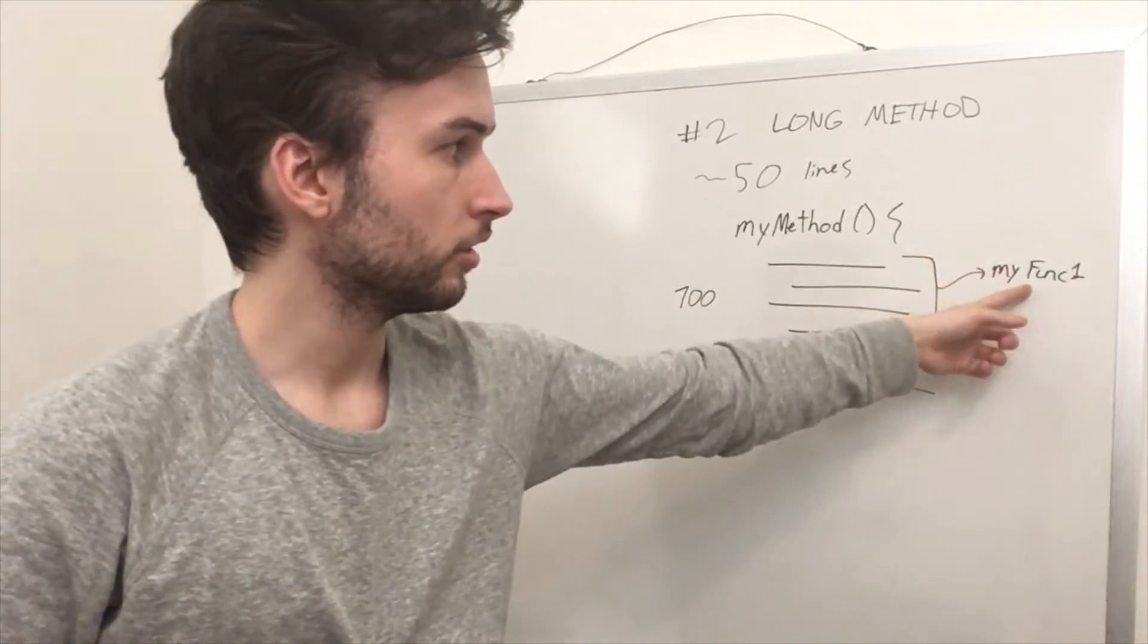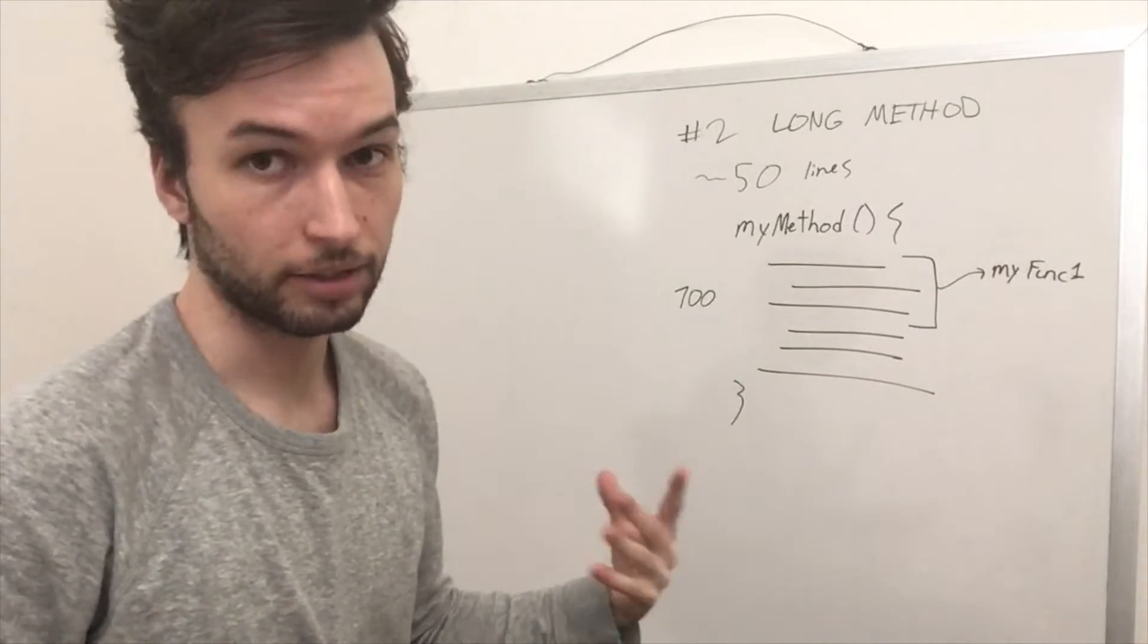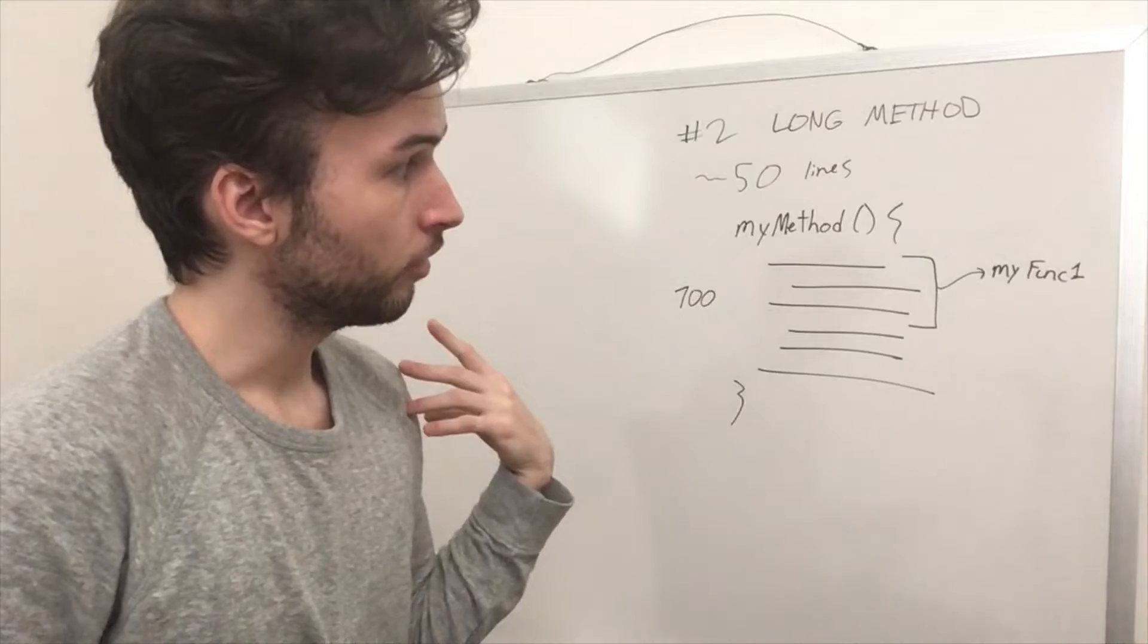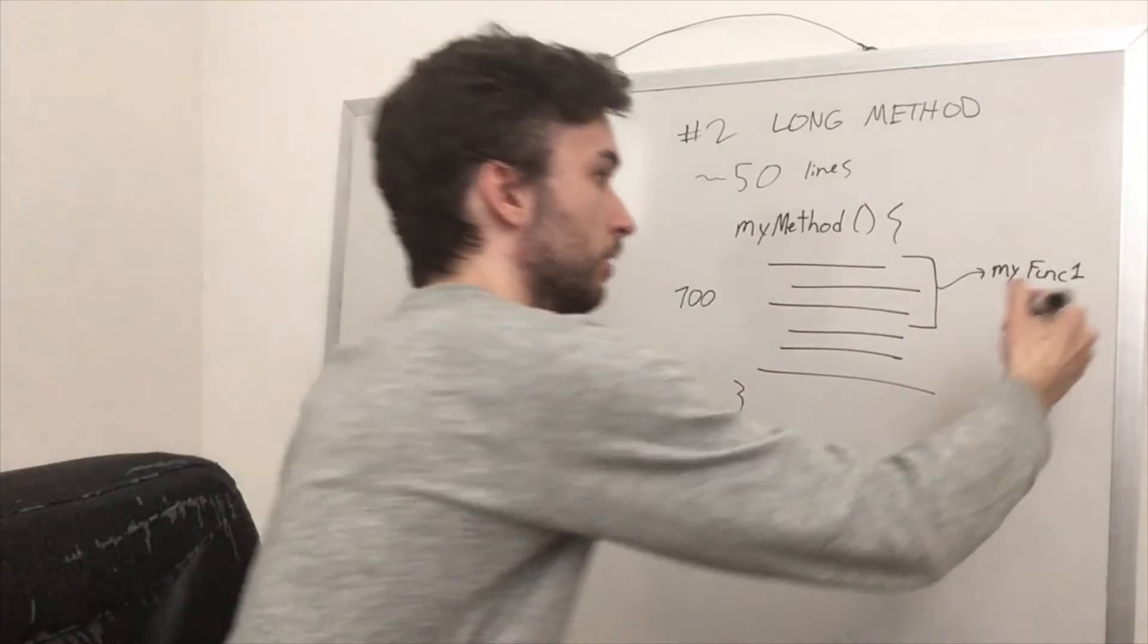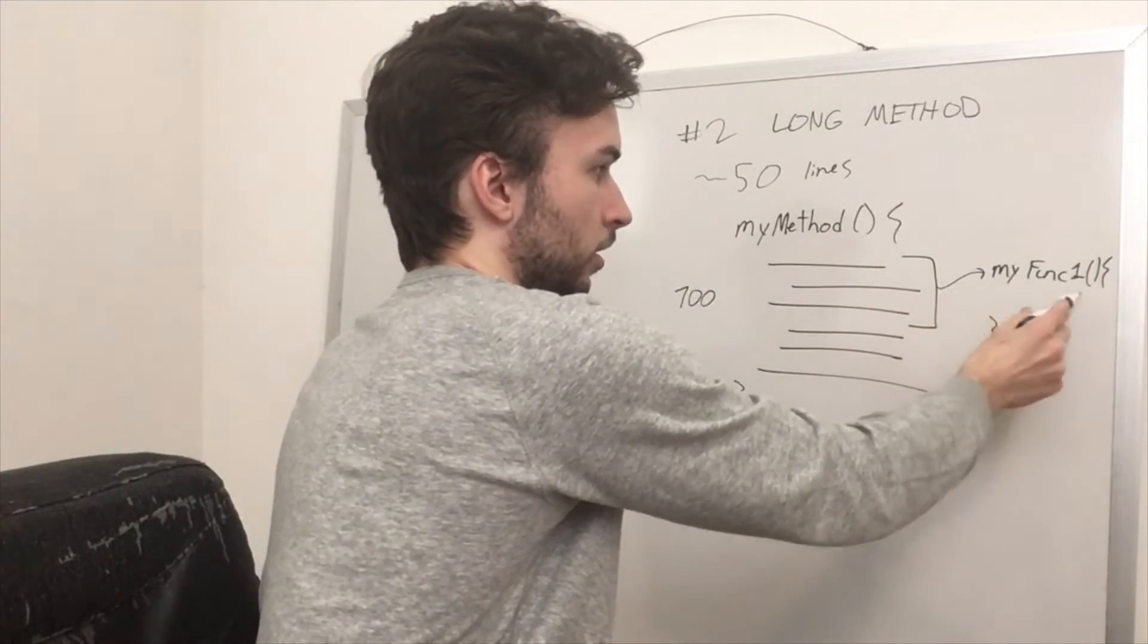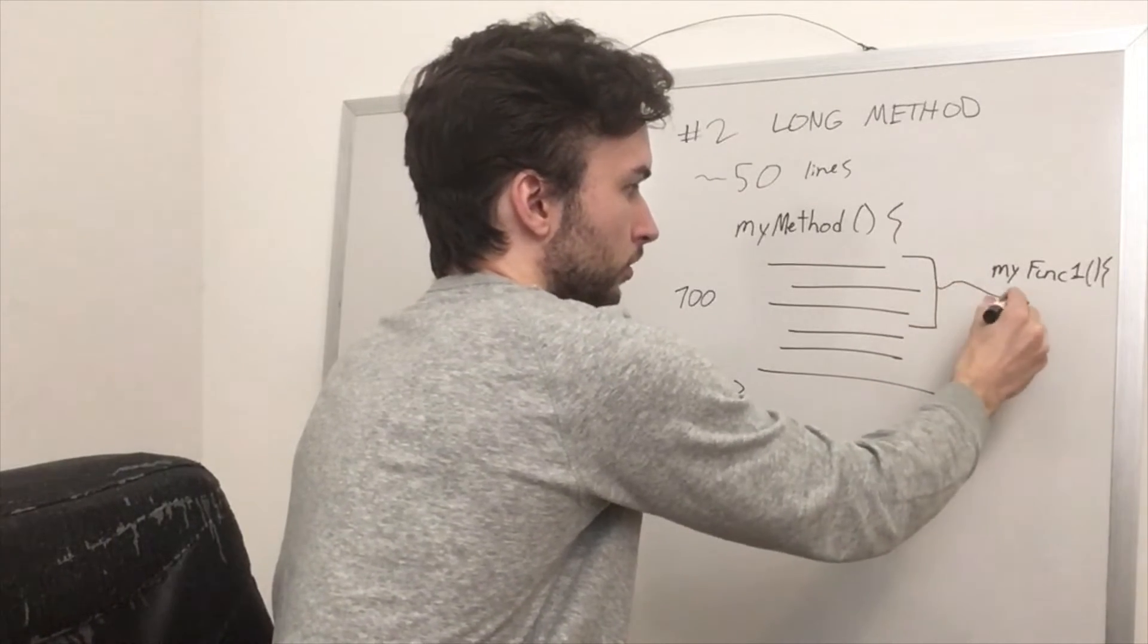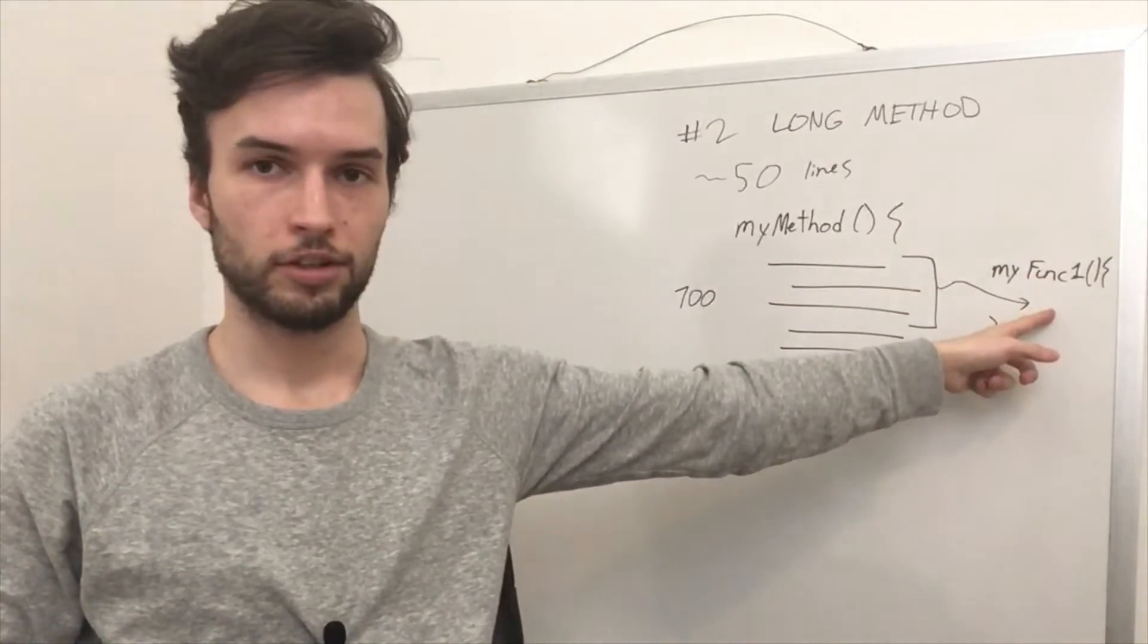But you would want to use a naming convention which describes whatever it's doing, like check security rules or start the party, start the event, whatever it's doing, right? That would just go in here, and then those lines, they would actually go directly inside of here. And then this would just call my function.